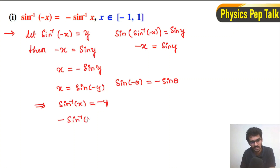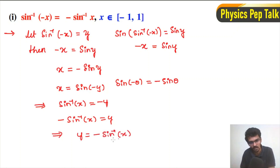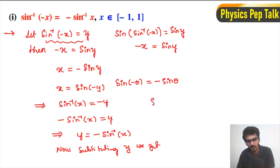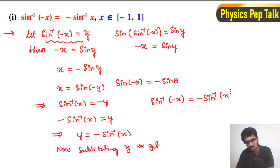We have sin inverse of x is equal to y. On rearranging the terms we get y is equal to minus sin inverse of x. Now substituting back for y, we get sin inverse of minus x is equal to minus sin inverse of x. This is the required result.